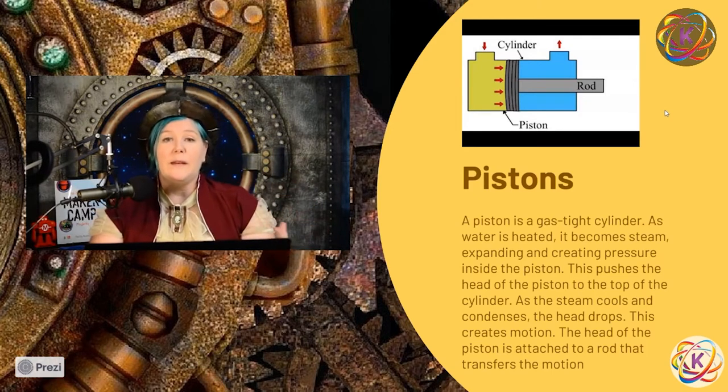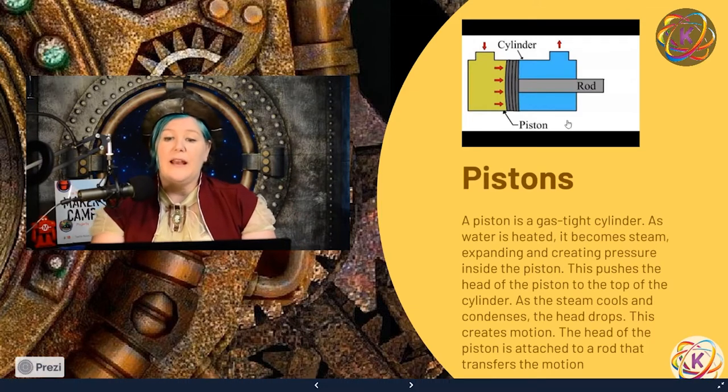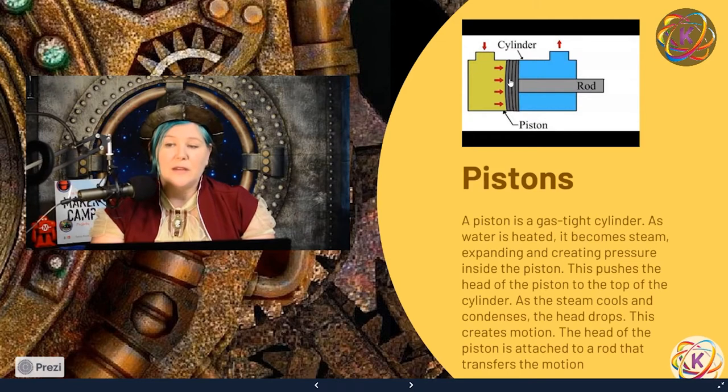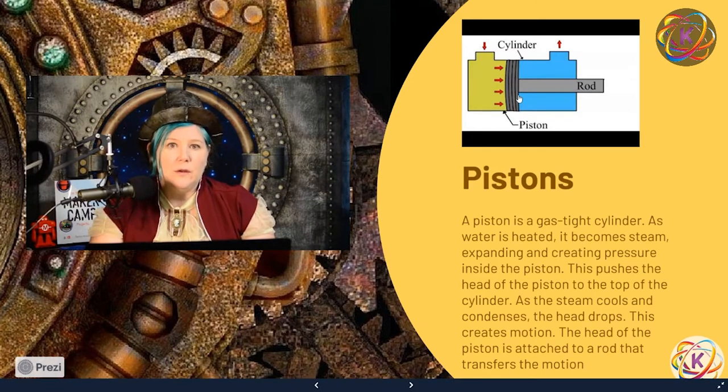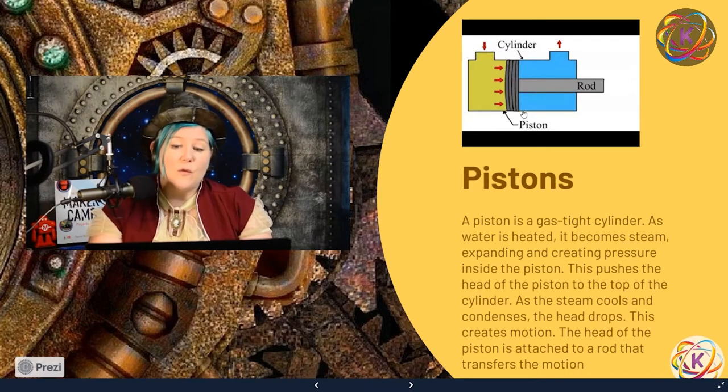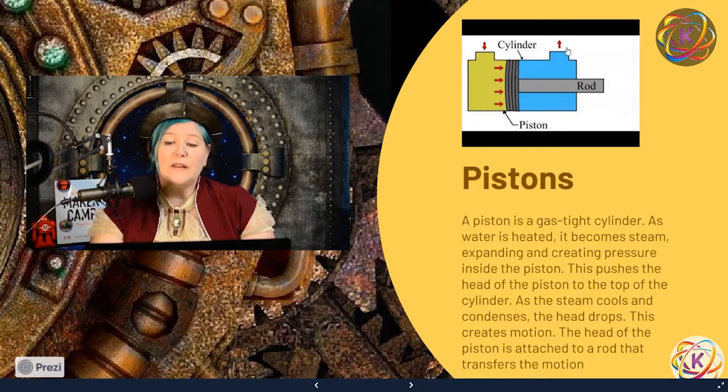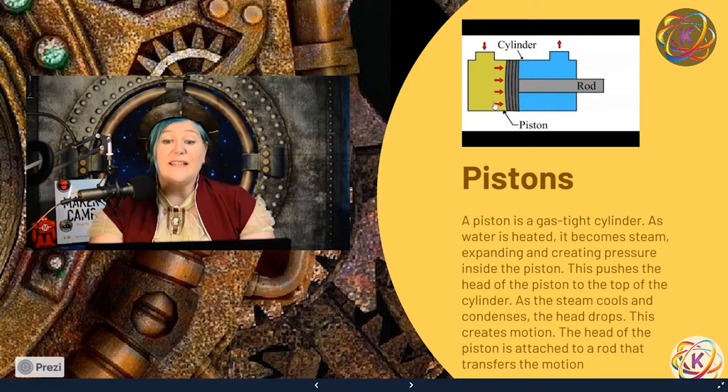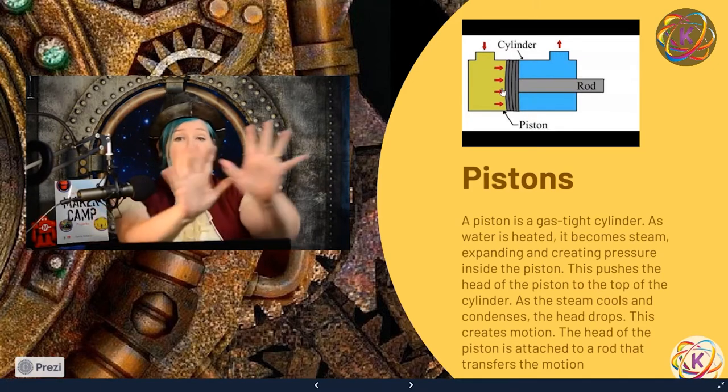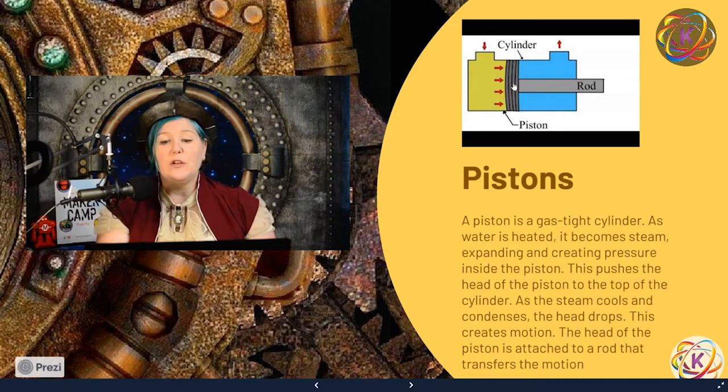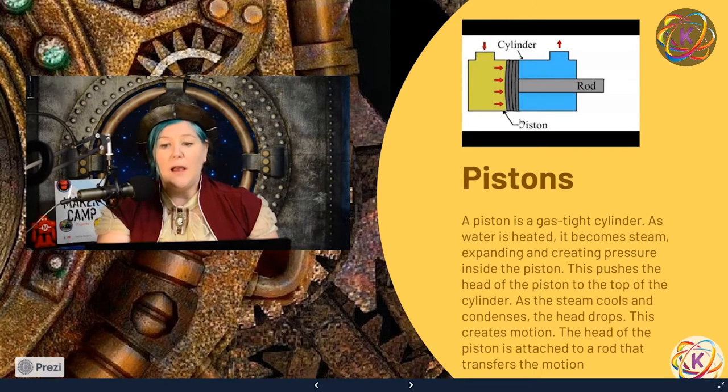So a piston, as I said, is a metal cylinder. It has this piston head. It's gas tight. So there's usually like rubber here so that the gas can't leak out around that head. It kind of has to stay there. And then it's attached to a rod. And you can see it. There are two spots. In comes the hot steam from the boiler. That steam comes in here. Well, it's expanding, it's exerting pressure, and it's going to push this head up.